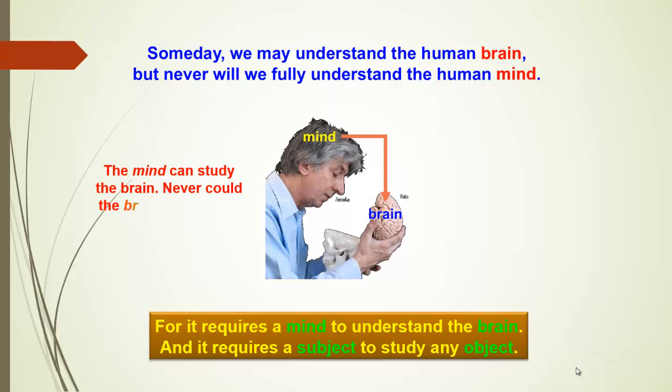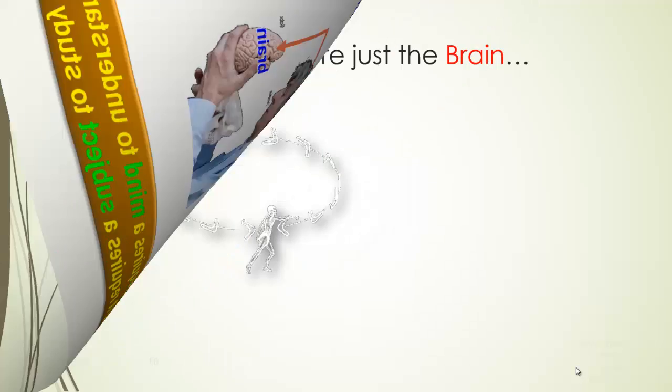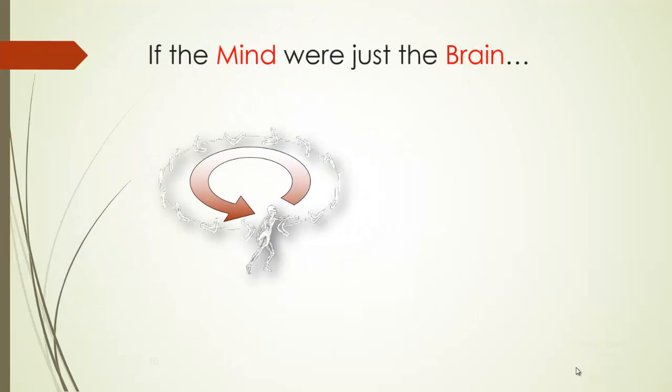In other words, the mind can study the brain, but never could the brain study itself. That would be a miracle. That is like a photocopy machine copying itself. The knowing subject must be more than the known object. The mind is the knowing subject, the brain...